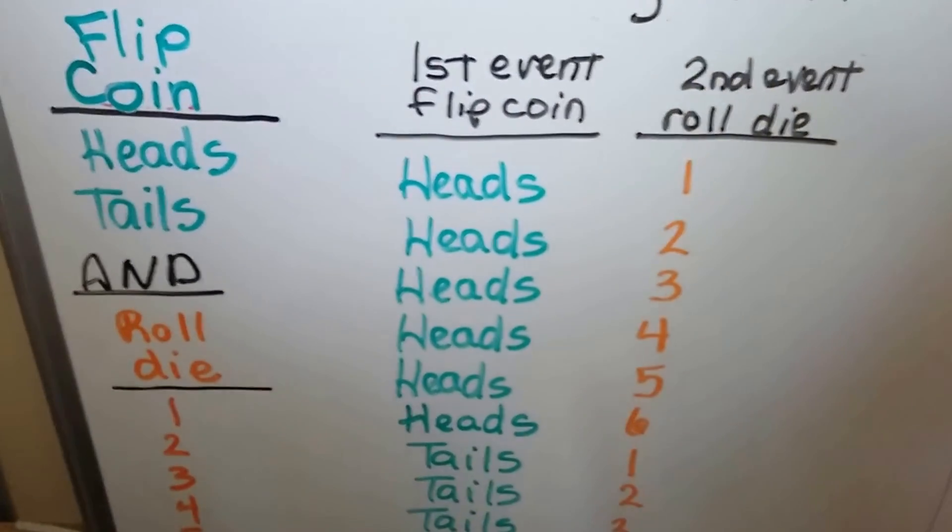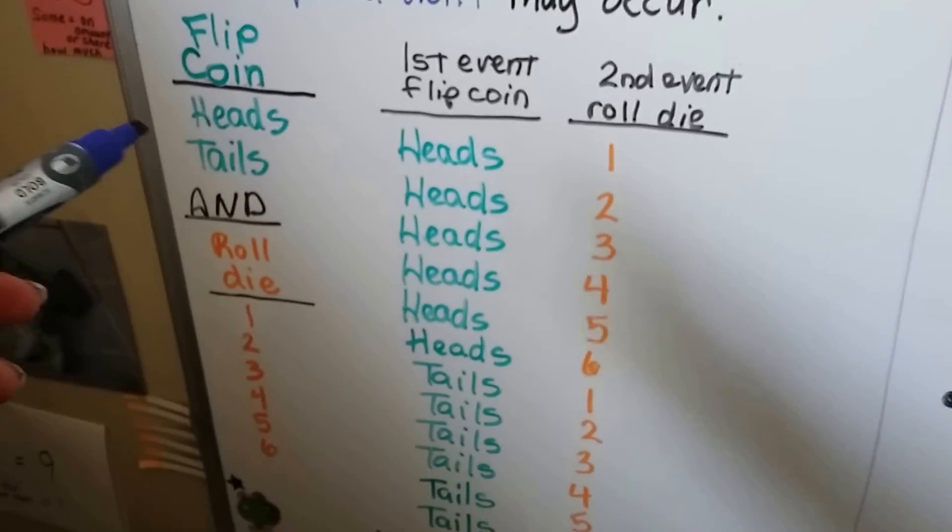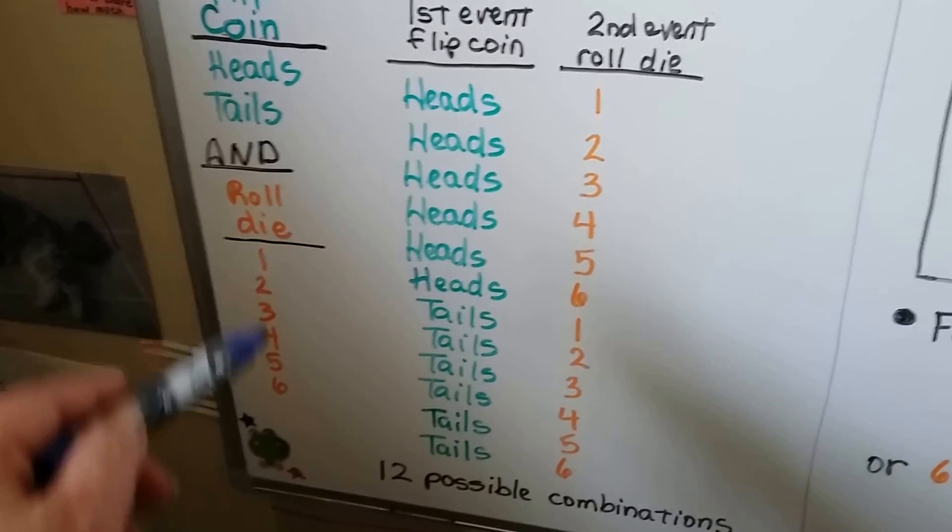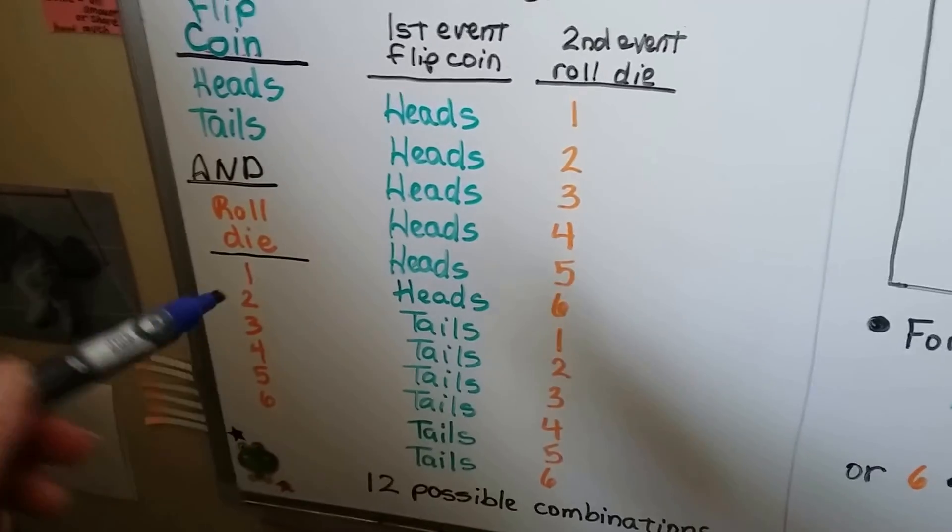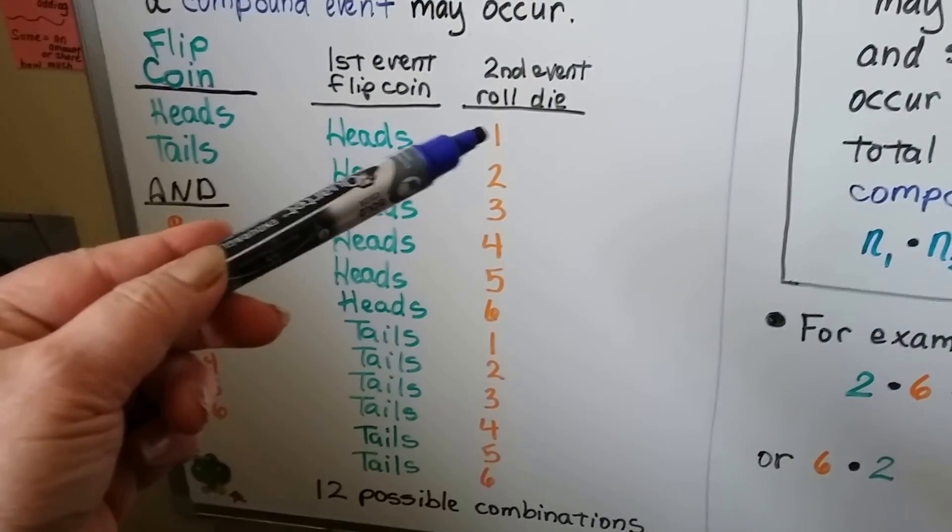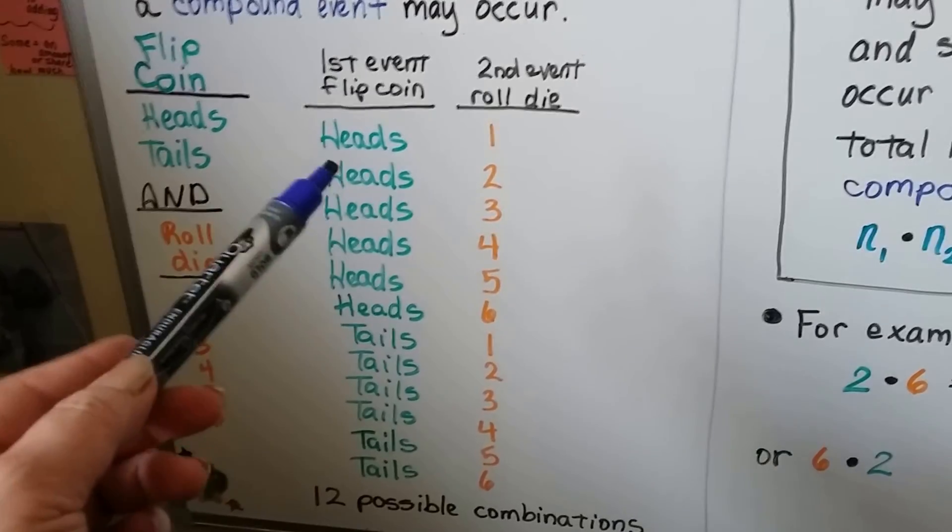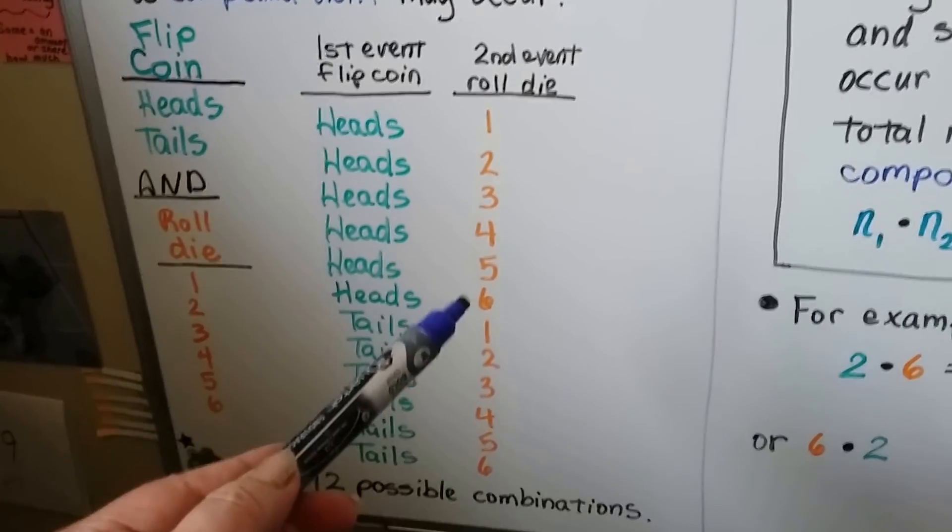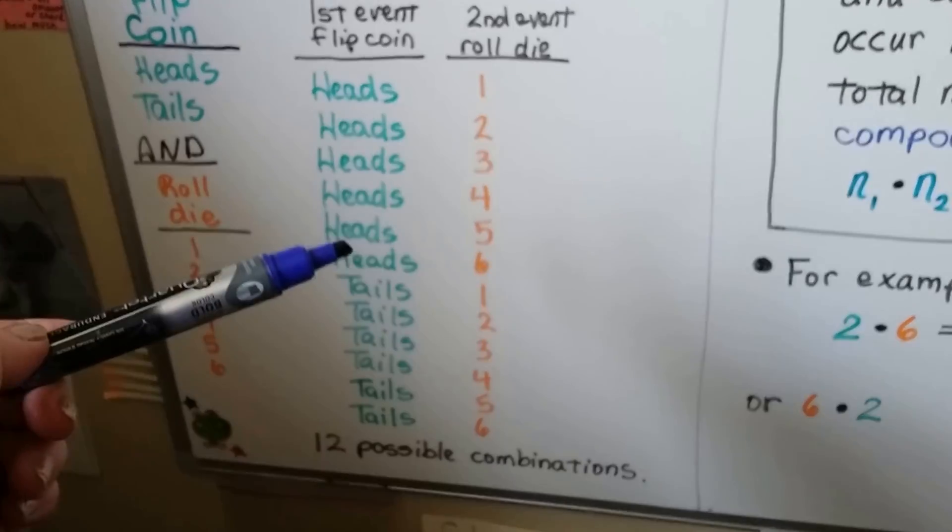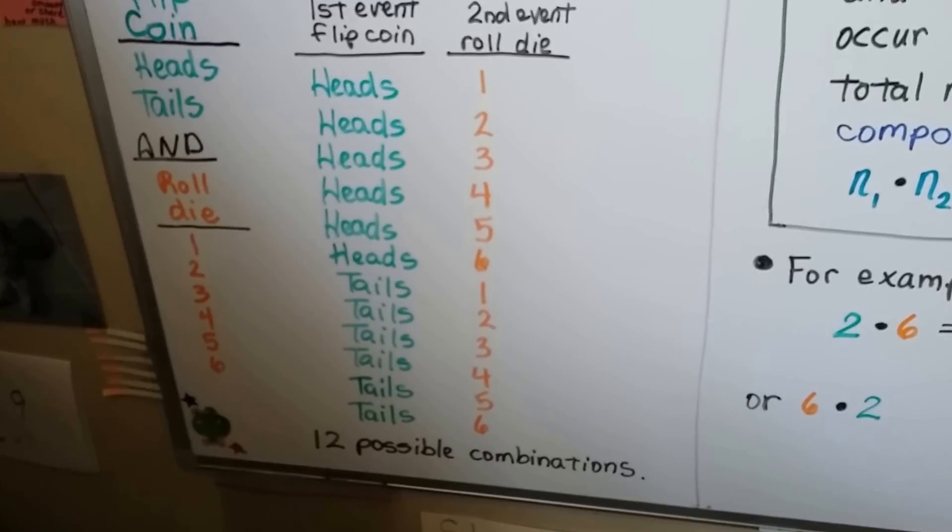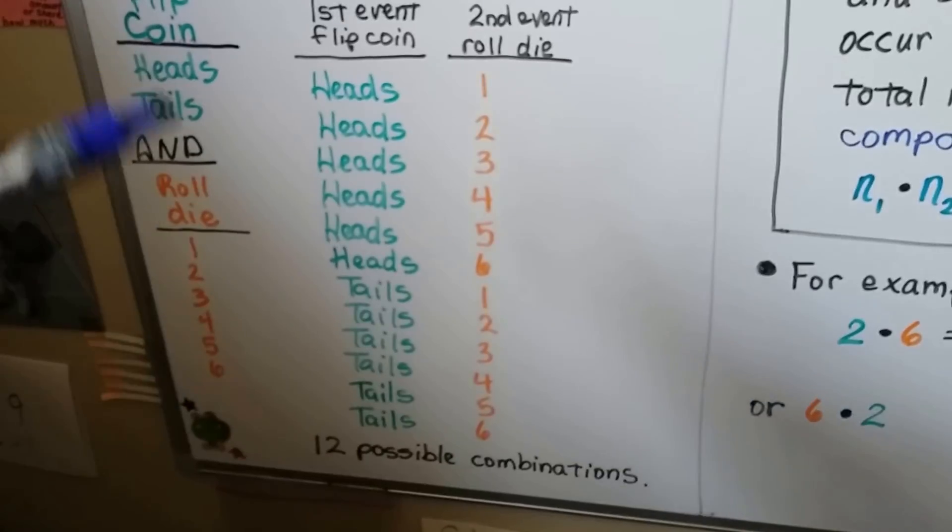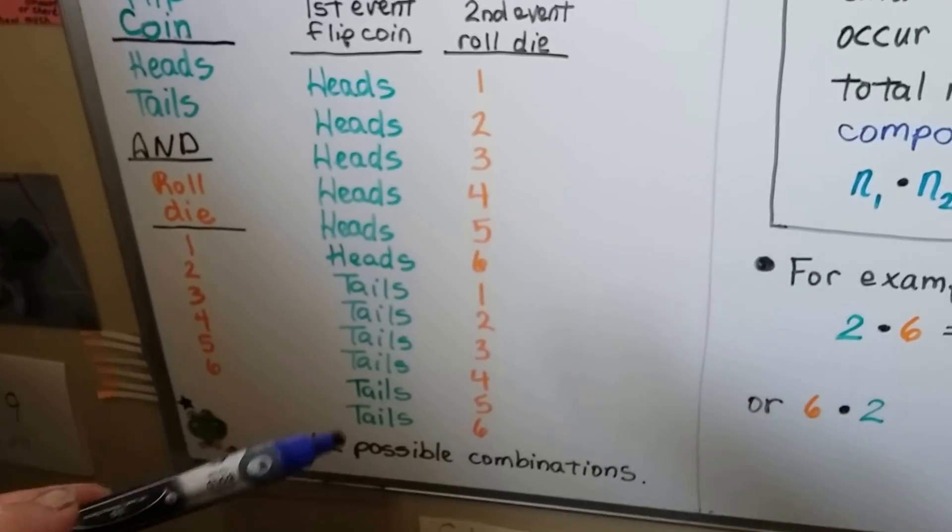So if we're going to flip a coin and roll a die, we're going to get either a heads or tails with the coin, and we're going to get one through six for the die. So our possibilities will be a heads and the die lands showing a one. We could have a heads with a two, and so on. We could have tails with one through six. That means we have six and six, twelve possible combinations. And if you look, there's two here, and six here, and two times six is twelve.